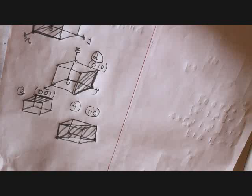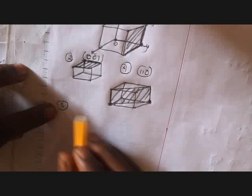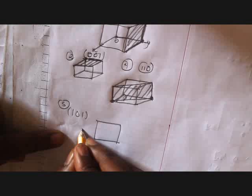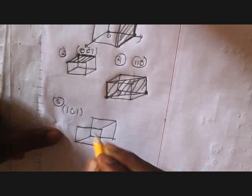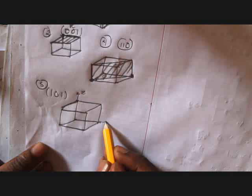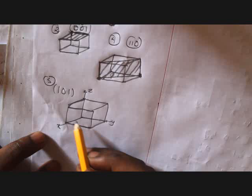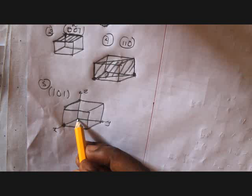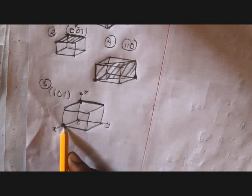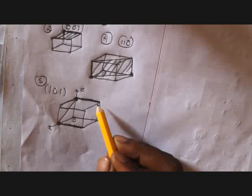Number five has Miller indices (101). Here z is this axis, y is this axis, and x is this axis. X is 1, y is infinity (zero), and z is 1. Since y is infinity, just take the parallel of it from the intercept points. Add the points together and shade the (101) Miller plane.